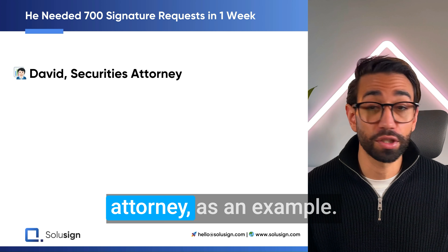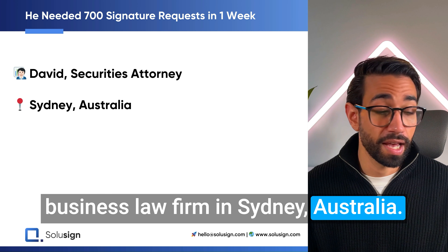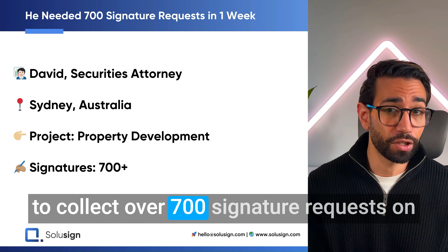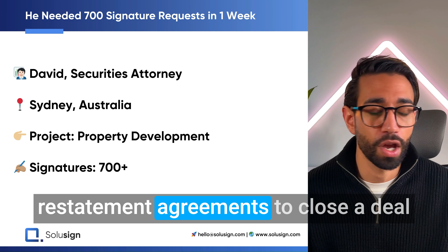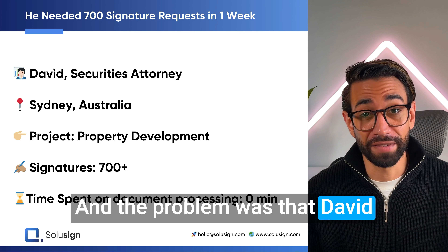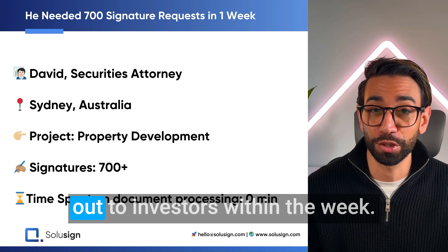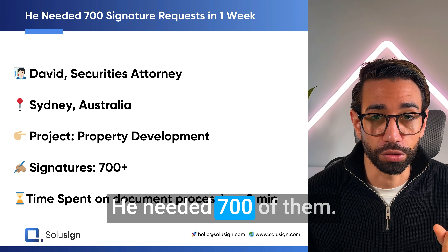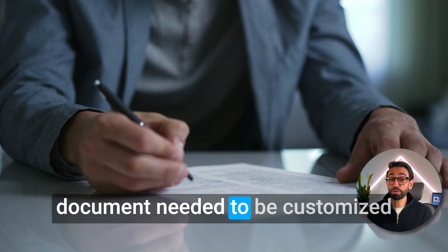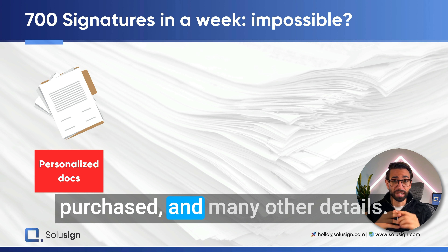Let me use David, the securities attorney, as an example. David is the principal of a boutique business offering in Sydney, Australia. When David approached me, he needed to collect over 700 signature requests for restatement agreements to close a deal for his large property developer client. He had promised his client that signature requests would be sent out to investors within a week. It was a monumental task because each document needed to be customized with names, addresses, property purchased, and many other details.